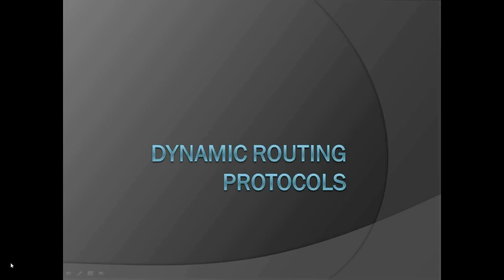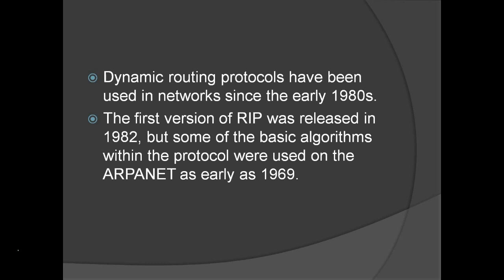For today's lesson, I'll be discussing Dynamic Routing Protocols. There are different dynamic routing configurations that you can do on Cisco routers. Remember that the internet is composed of multiple routers connected to one another. Dynamic Routing Protocols have been used in networks since the early 1980s. The first version was RIP, or the Routing Information Protocol, released in 1982, though some basic algorithms were used on the ARPANET as early as 1969.